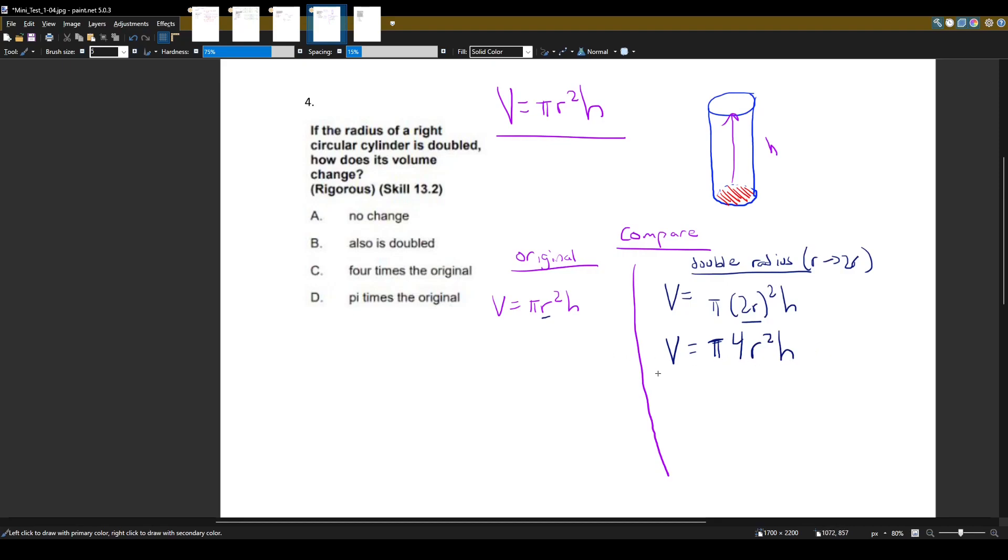Now let's try to get these to look like each other. We have pi r squared h, but this 4 is out of place. So let's stick it in the front.